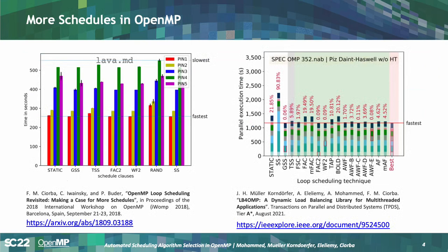Besides the standard OpenMP scheduling kinds — static, dynamic, and guided — OpenMP runtimes can also be extended with more scheduling methods. We have seen different papers that make the case that more scheduling techniques can improve application performance in certain scenarios. In one study, four additional scheduling algorithms defined in OpenMP showed better performance using different planning strategies for the same benchmark.